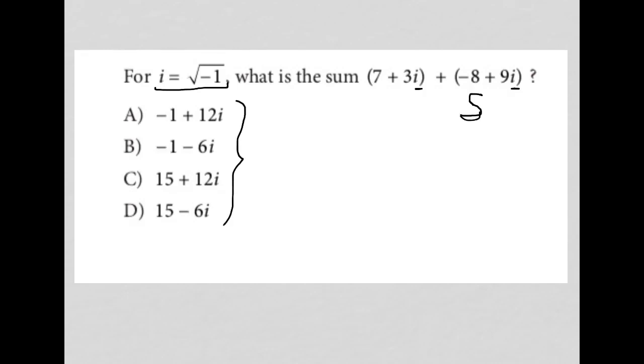So how do I simplify this? Within the first parentheses, the 7 plus 3i, there's nothing to simplify there. So that's going to remain 7 plus 3i. No need for parentheses any longer.